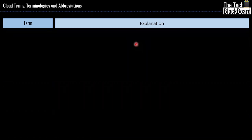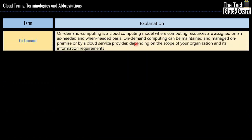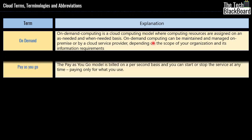Our next term is on demand. Simply put, in cloud you can provision resources like storage, servers, or databases as per your needs. You are not tied to the resources as you have not purchased them — you just pay for what you use. This brings us to our next term: pay as you go. Pay as you go means you are billed for services only while you use them, billed on a per-second basis so you don't have to pay anything extra.